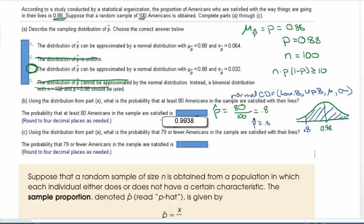Let's look at part C right quick. For part C, it's a similar idea, except that it's asking us, what's the probability that 79 or fewer Americans in the sample are satisfied with their lives? We're starting off with that same normal curve, so that's the same picture where we have 0.88 in the middle. 79 or fewer.